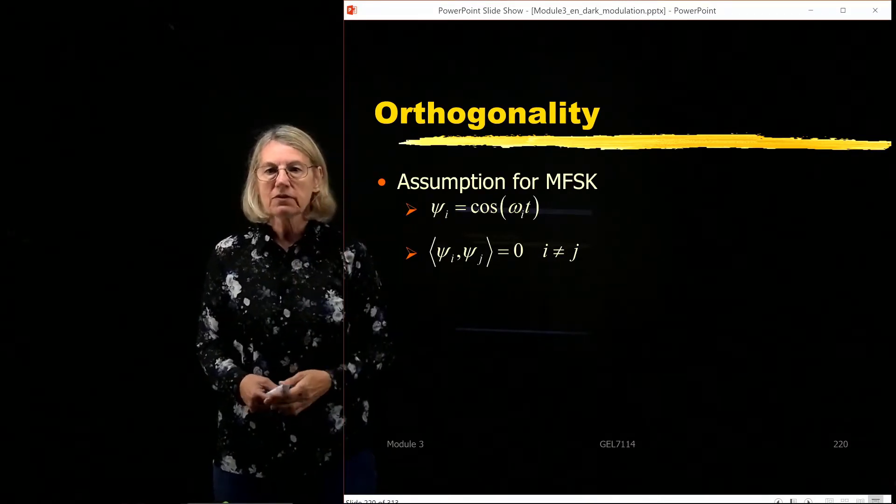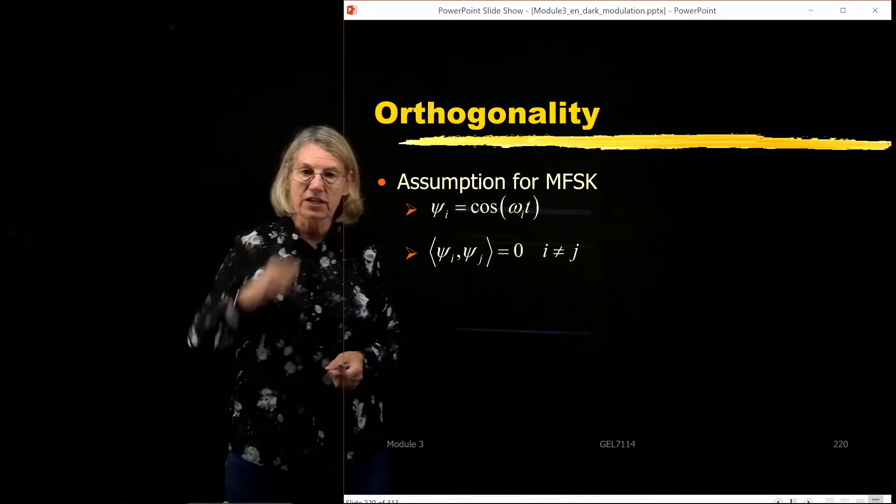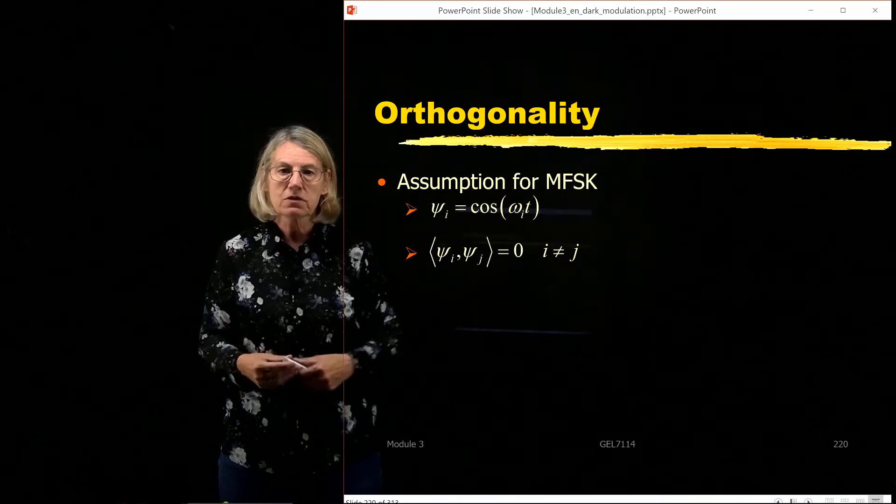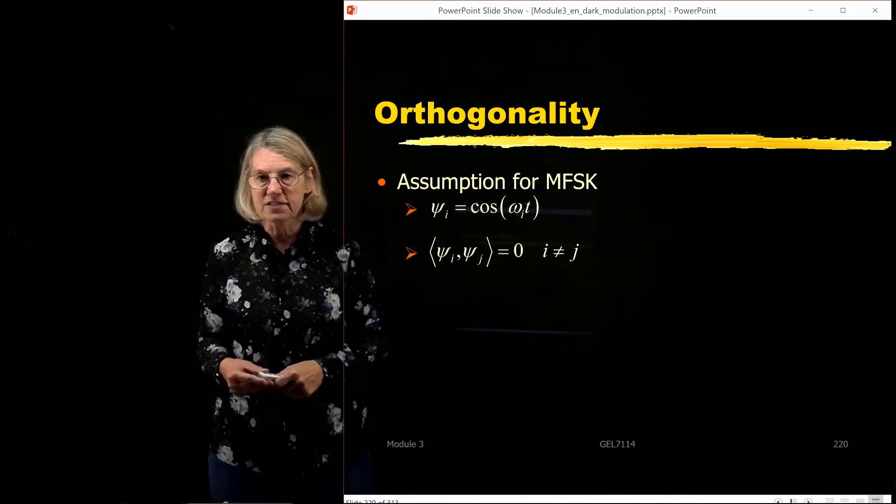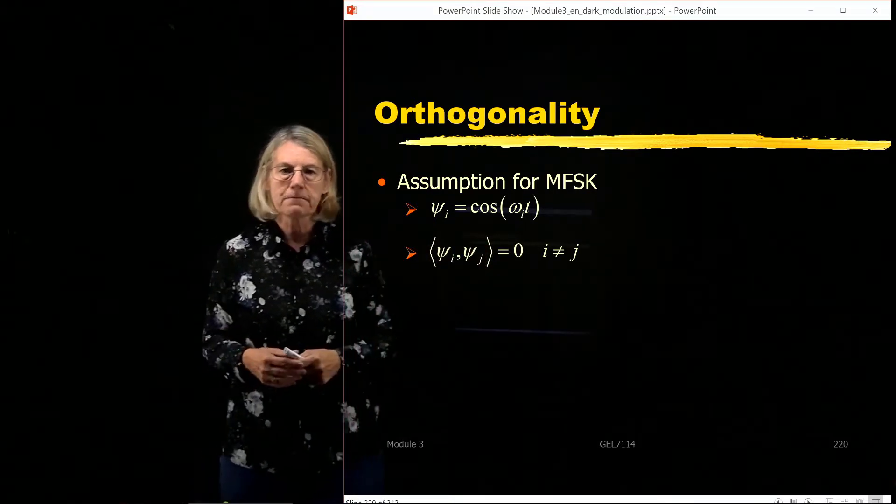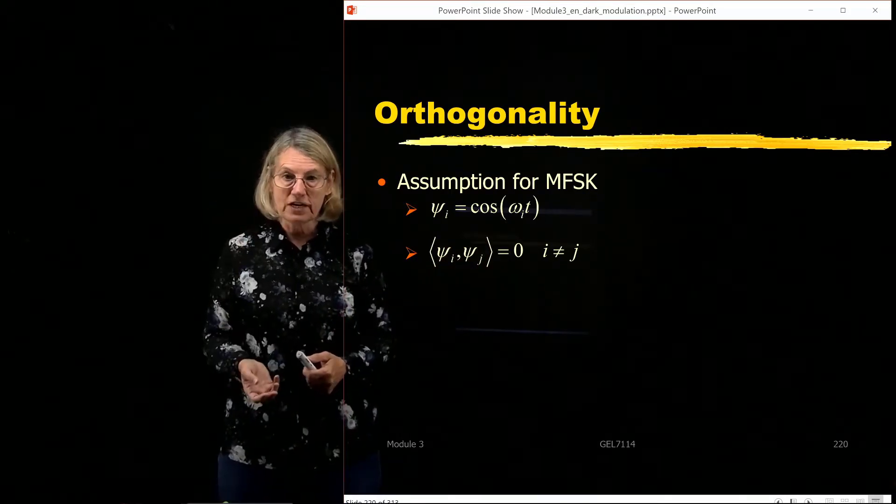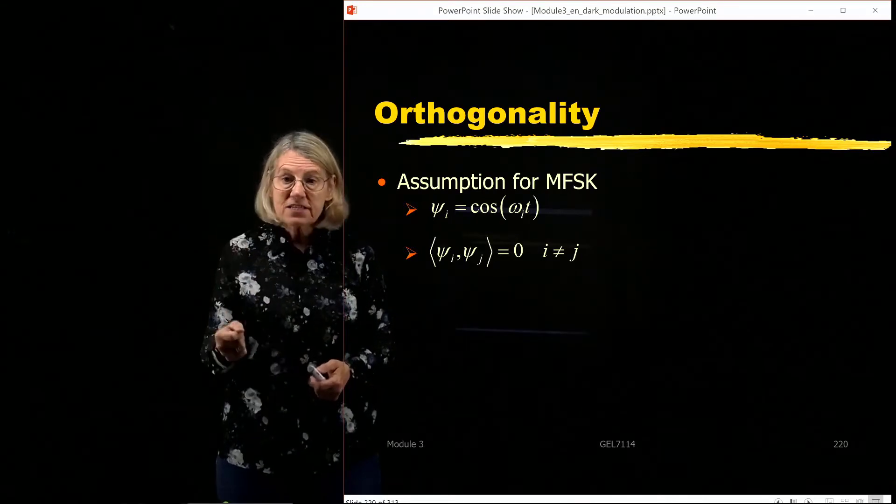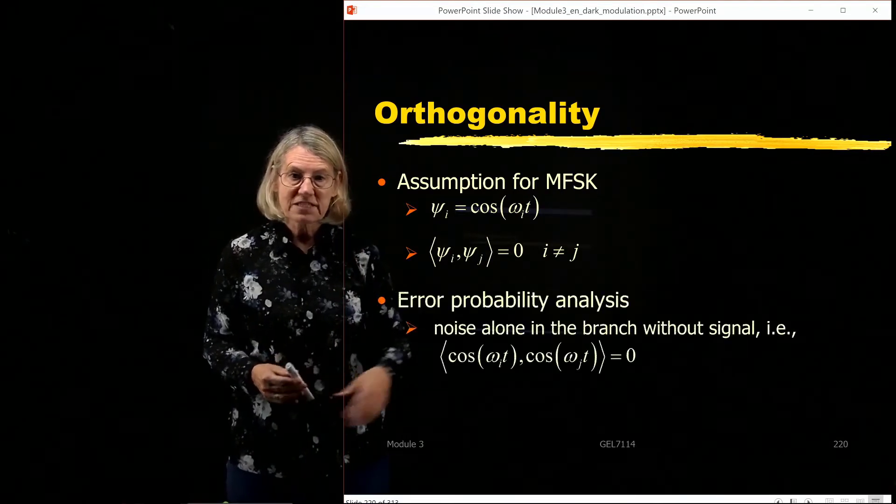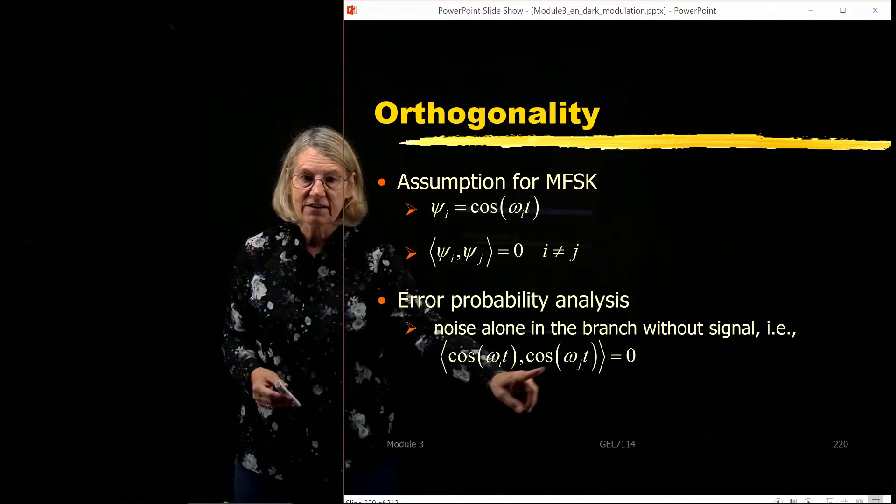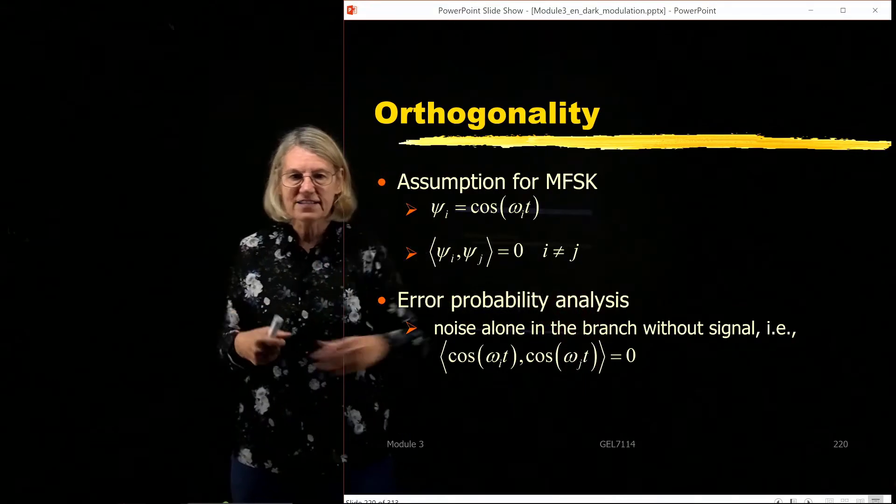So let's recall what were our defining features of frequency shift keying. Of course it's an orthogonal modulation format. Each one of the symbols is a different frequency, and the basis vectors are pretty much the symbol vectors because it's an orthogonal modulation already. That means that each one of these cosines is supposed to be orthogonal to one another. That was our assumption, right? I said the basis vectors were just the symbols because the symbols were orthogonal.